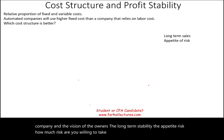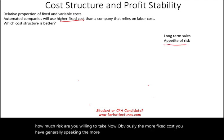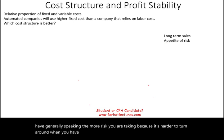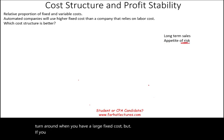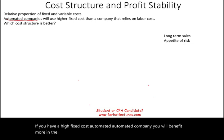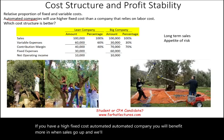Obviously, the more fixed cost you have, generally speaking, the more risk you are taking, because it's harder to turn around when you have a large fixed cost. But if you have a high fixed cost automated company, you will benefit more when sales go up. We'll see an example illustrating this concept.